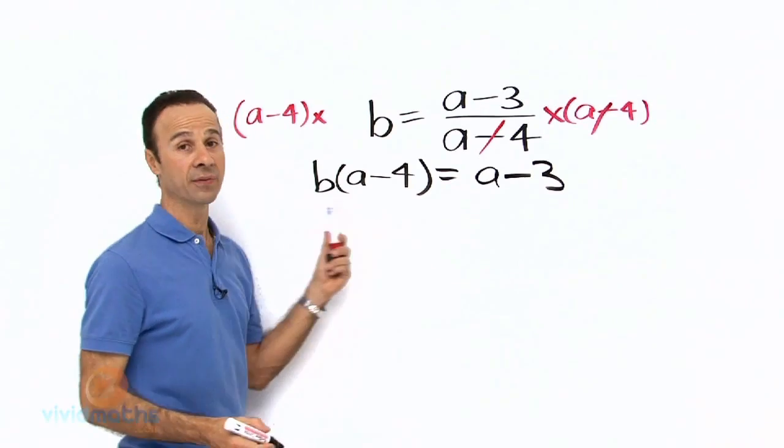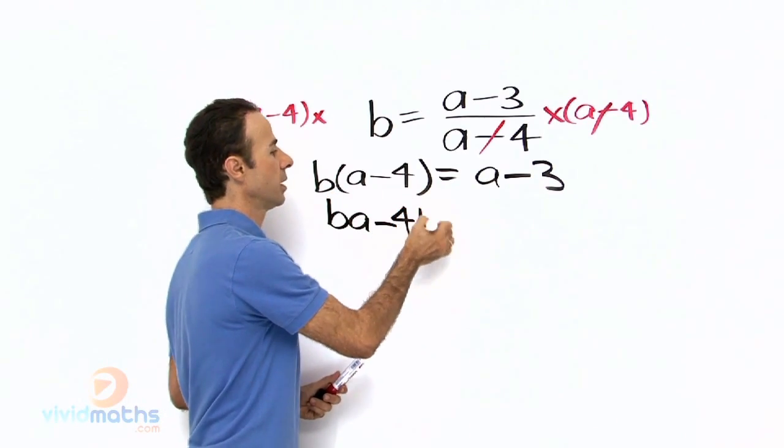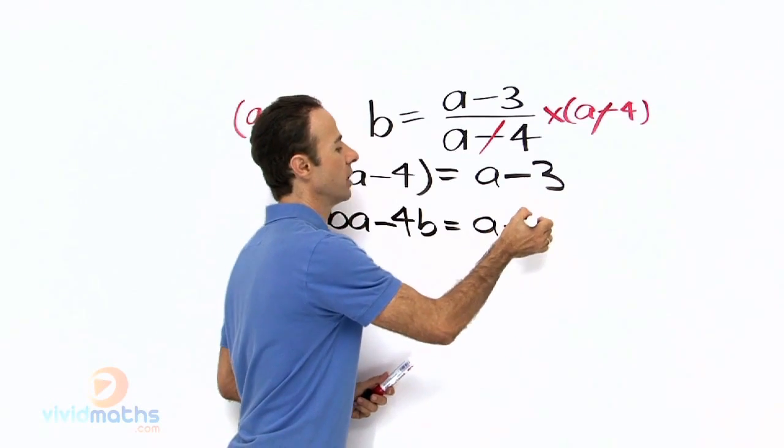Let us expand the left-hand side, so we have BA minus 4B equals A minus 3.